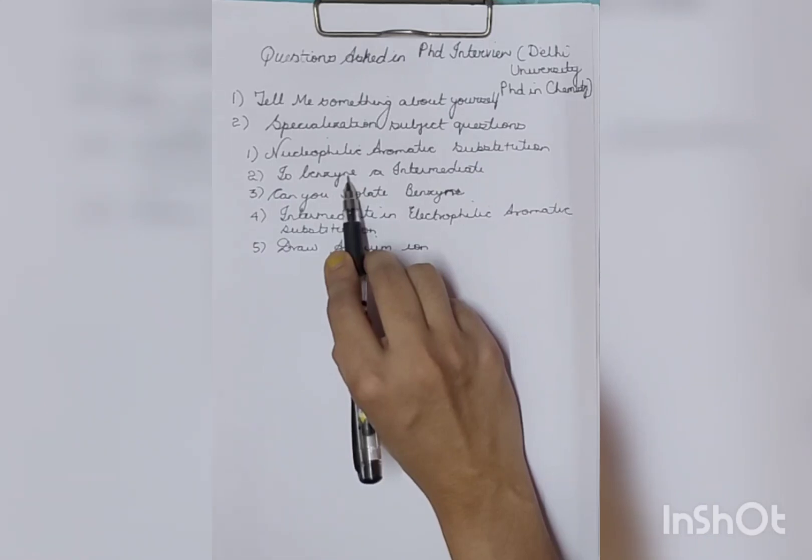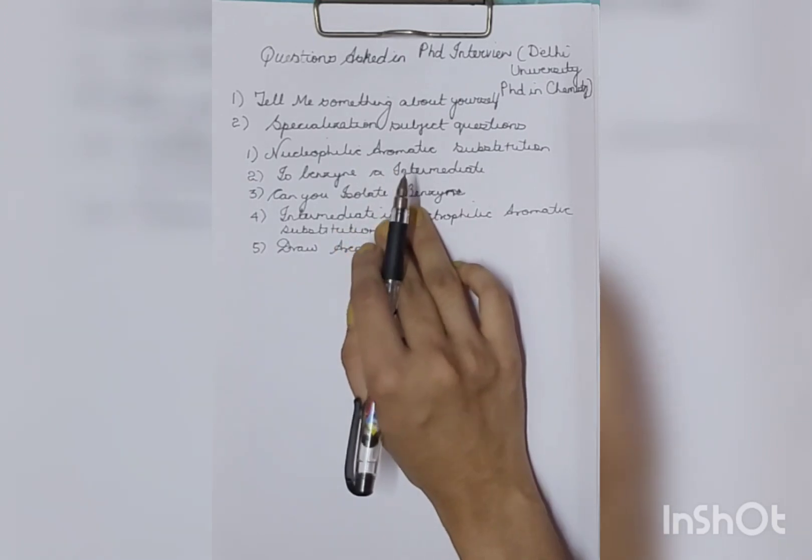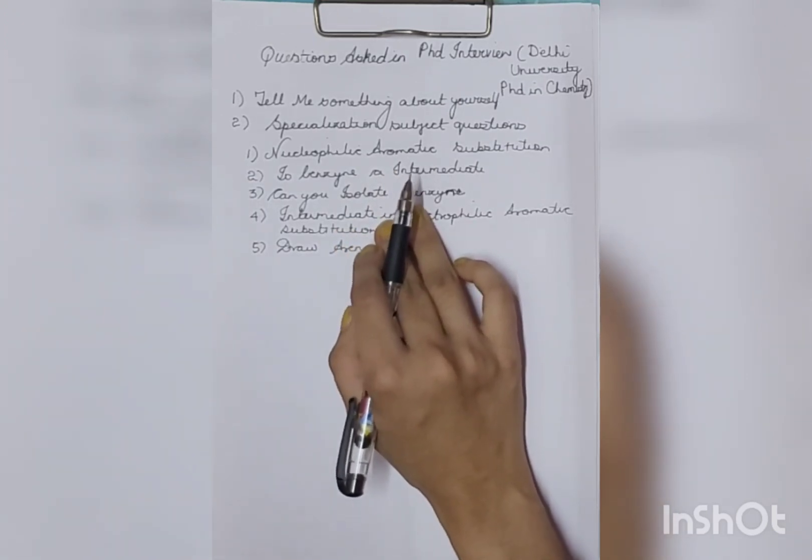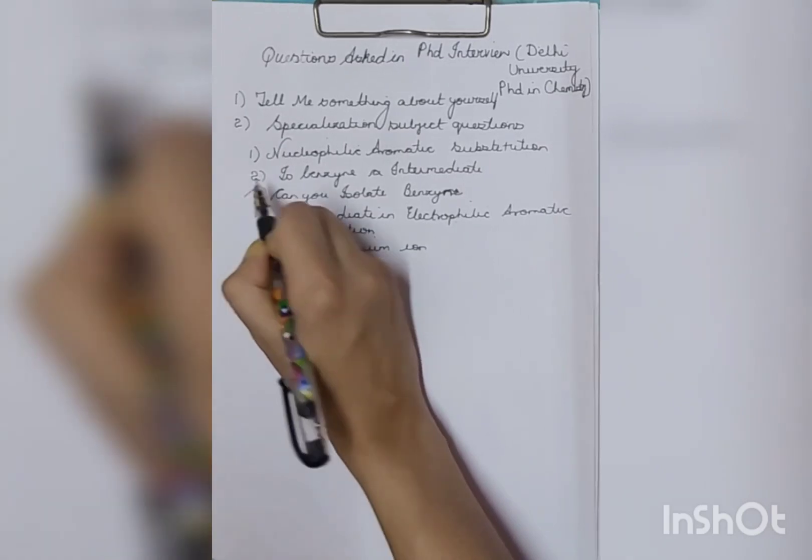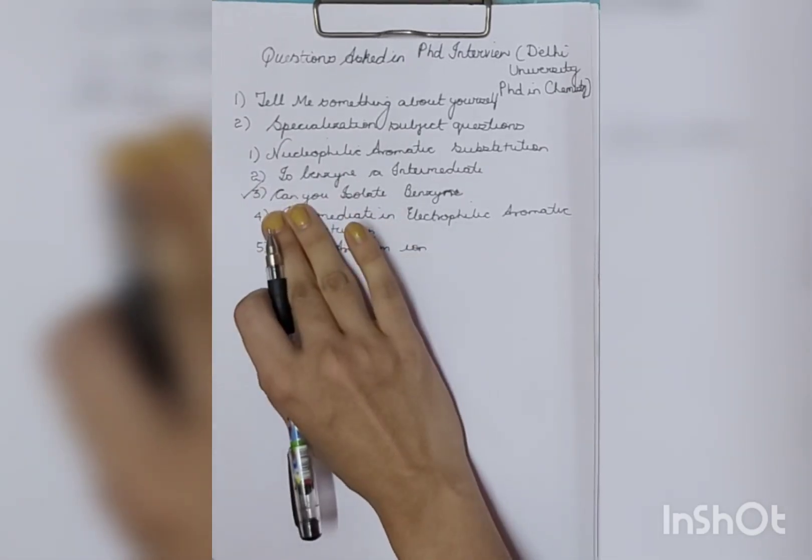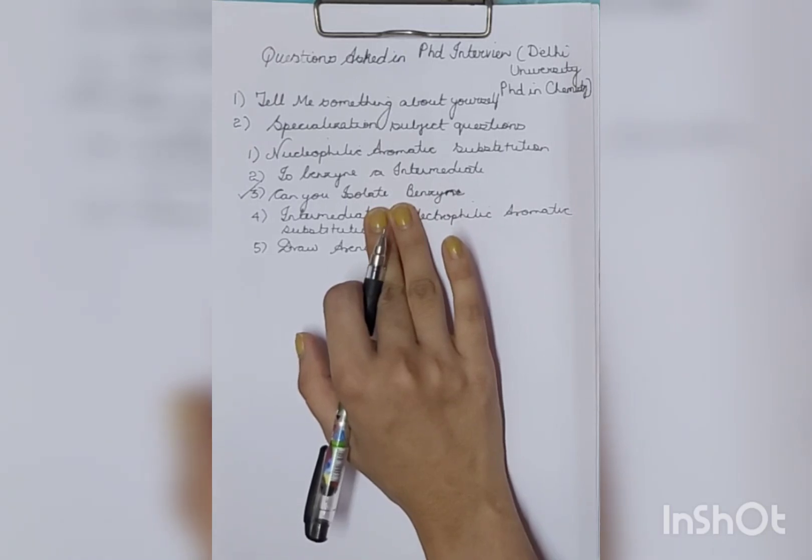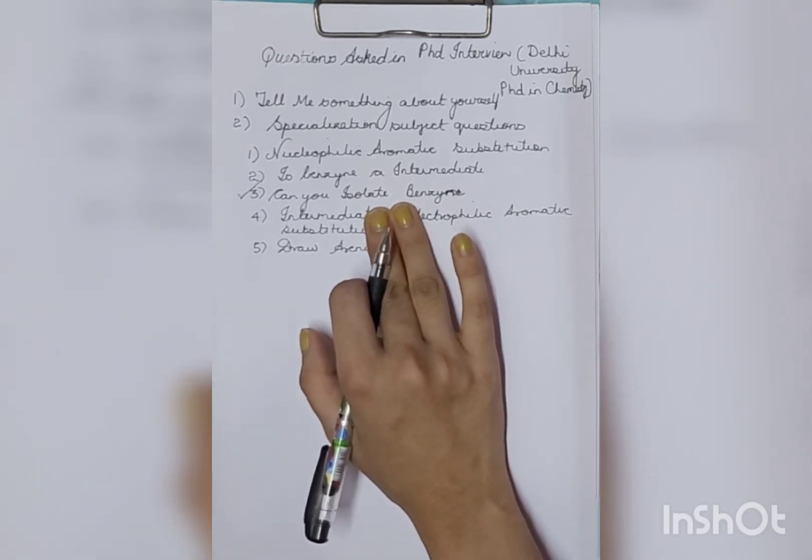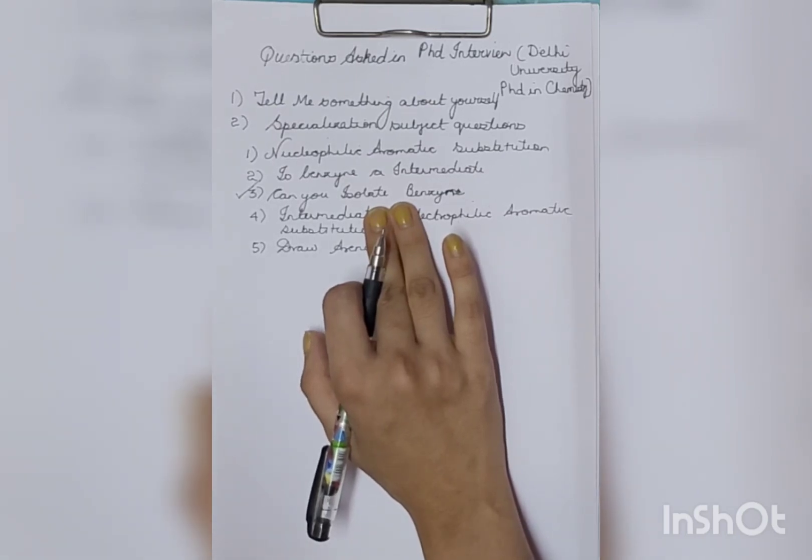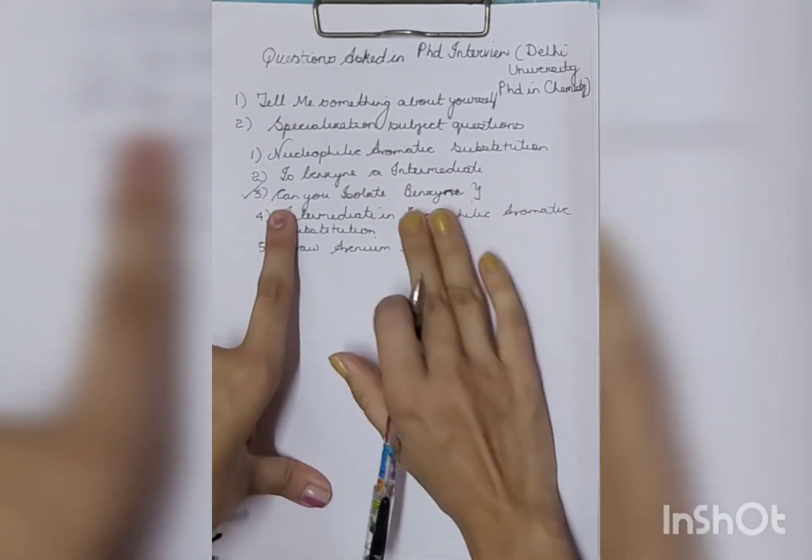Now what happened - they tried to confuse me. They said is it an intermediate or transition state. I said sir it is an intermediate. So they were trying to confuse me - they were not saying no it's not an intermediate, they were saying are you sure. Then they asked me this question so that I would get confused.